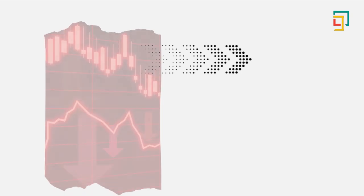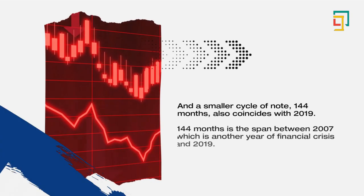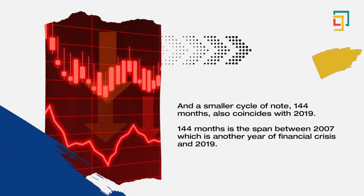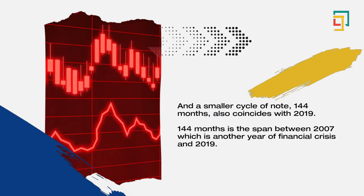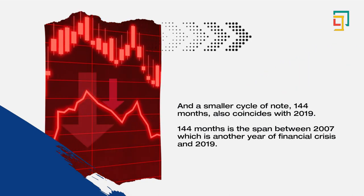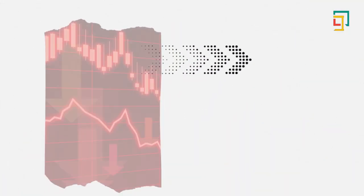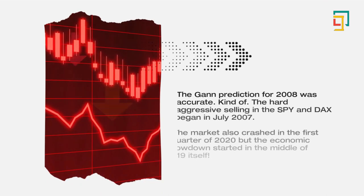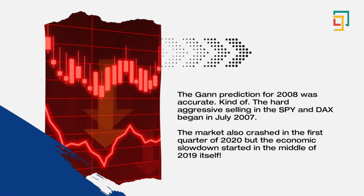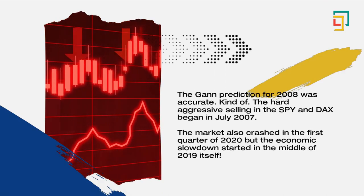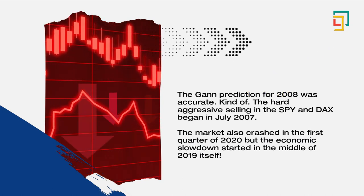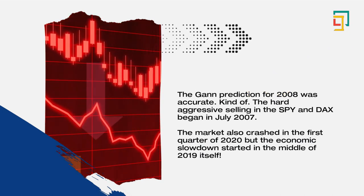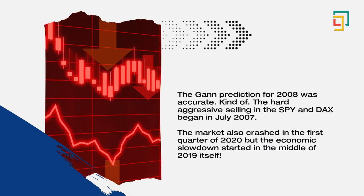And a smaller cycle of note, 144 months, also coincides with 2019. 144 months is the span between 2007, which is another year of financial crisis, and 2019. The Gann prediction for 2008 was accurate. Kind of. The hard aggressive selling in the SPI and DAX began in July 2007. The market also crashed in the first quarter of 2020 but the economic slowdown started in the middle of 2019 itself.